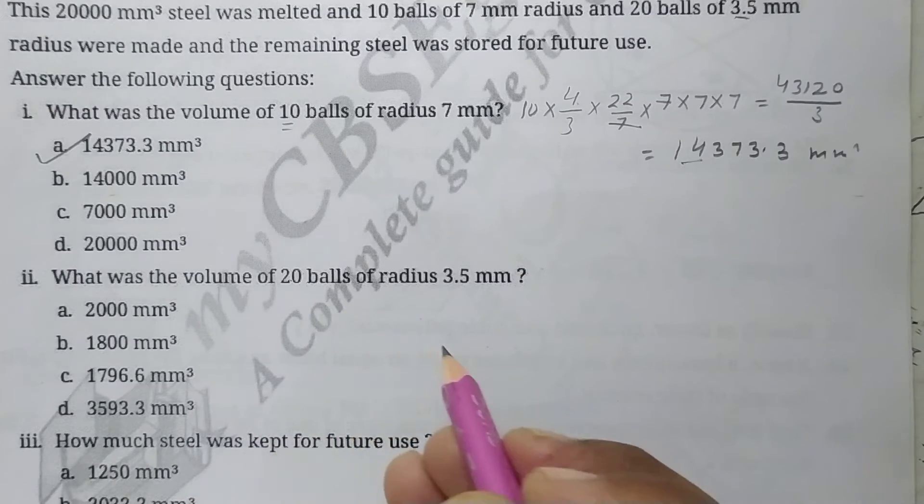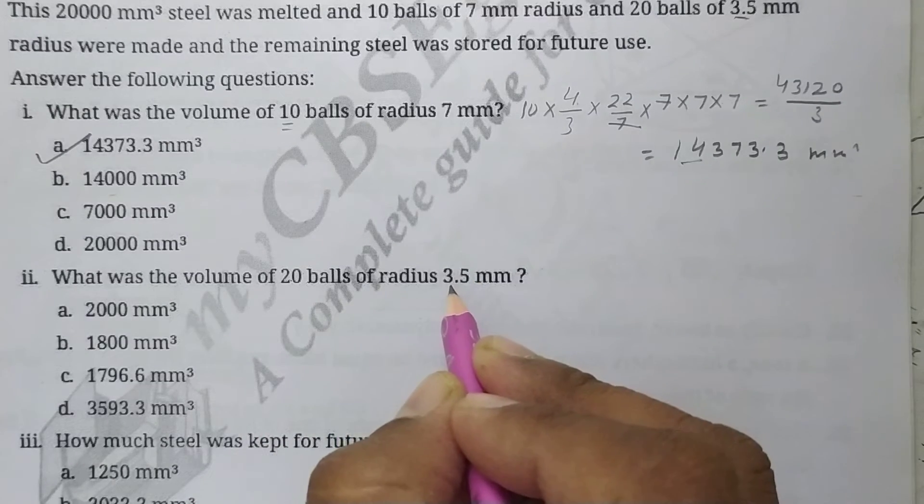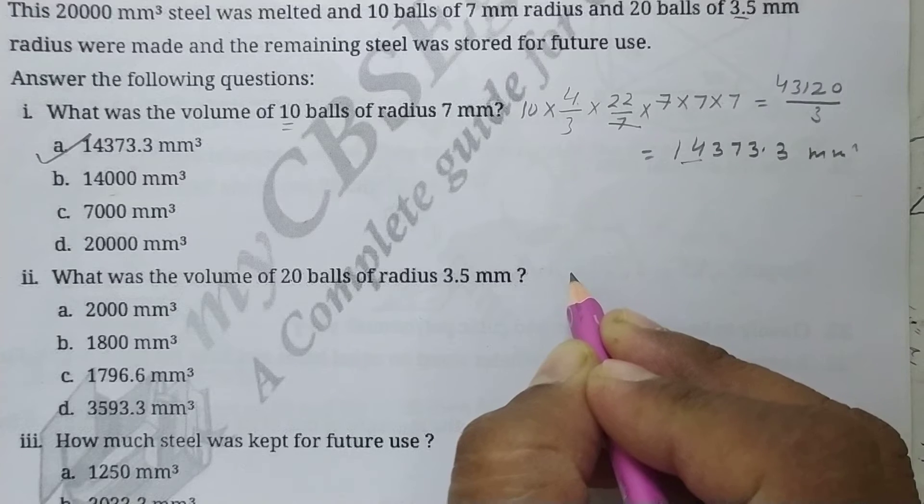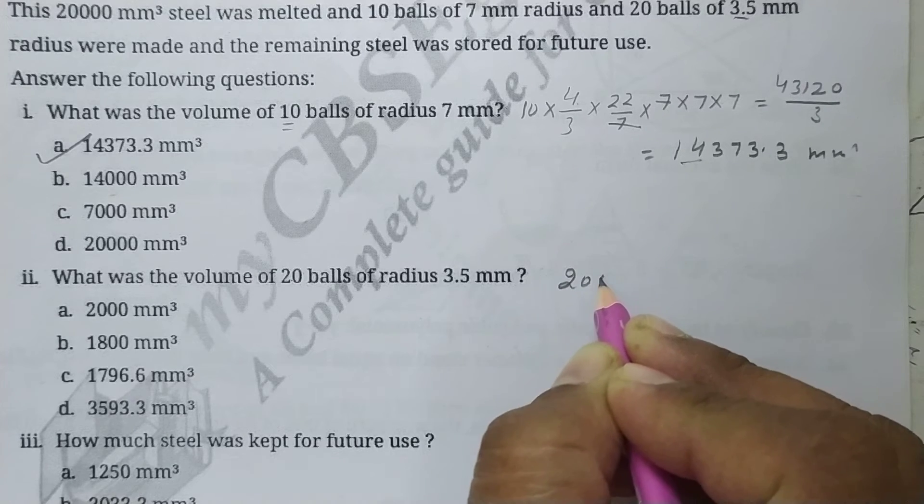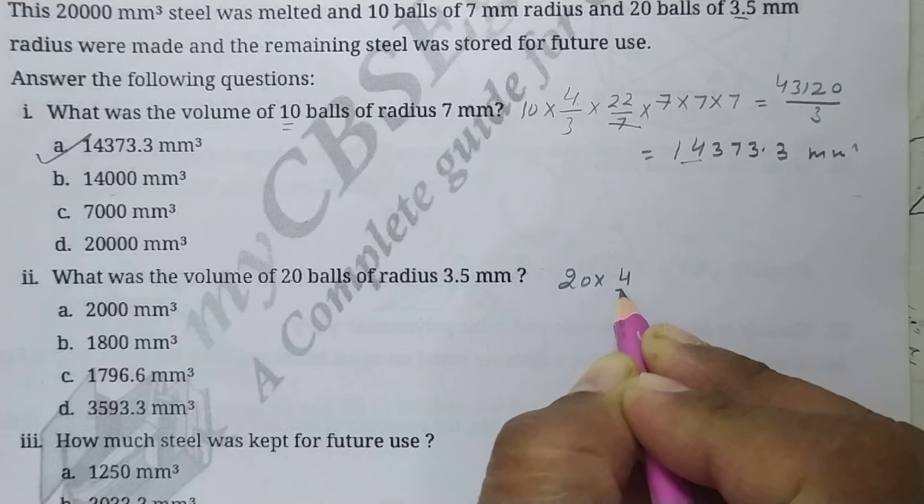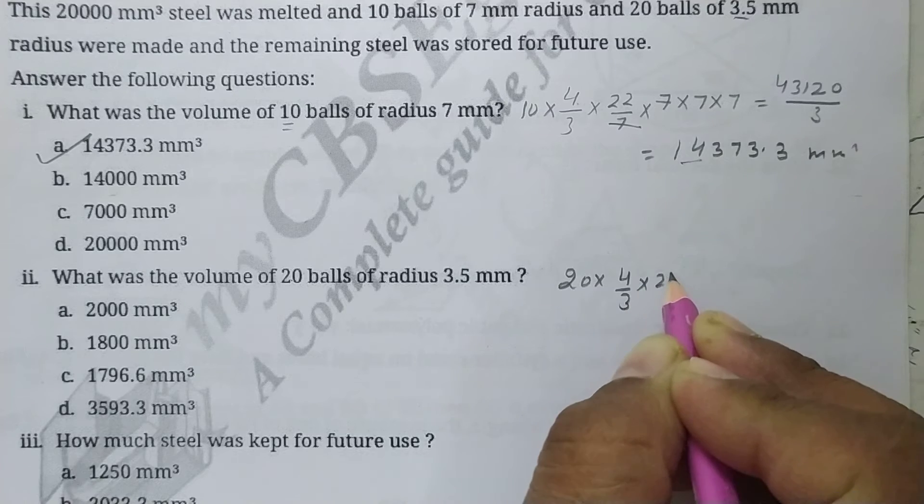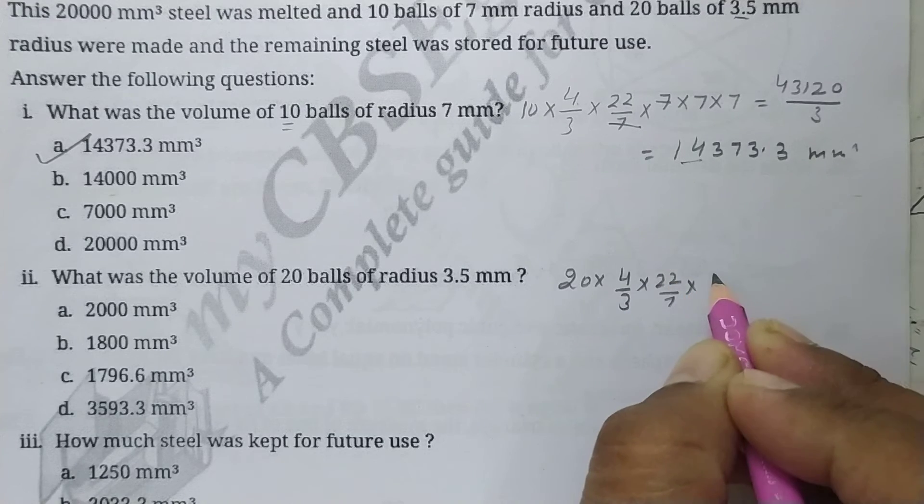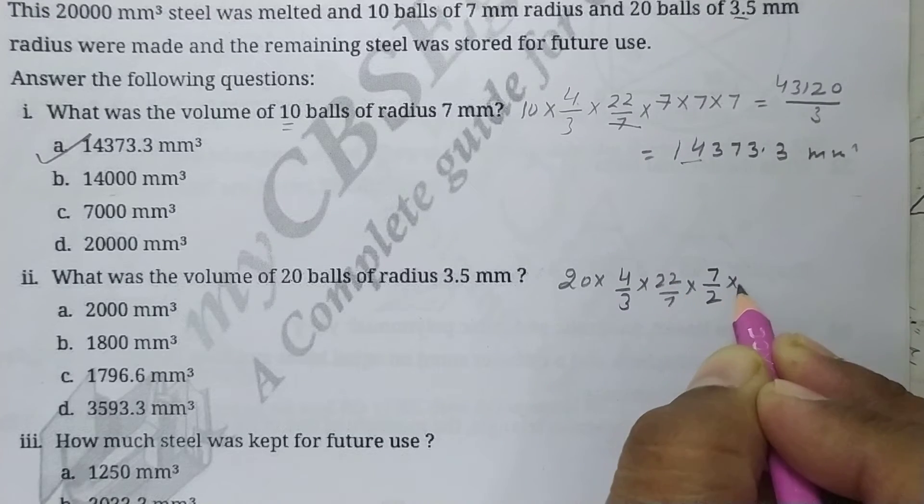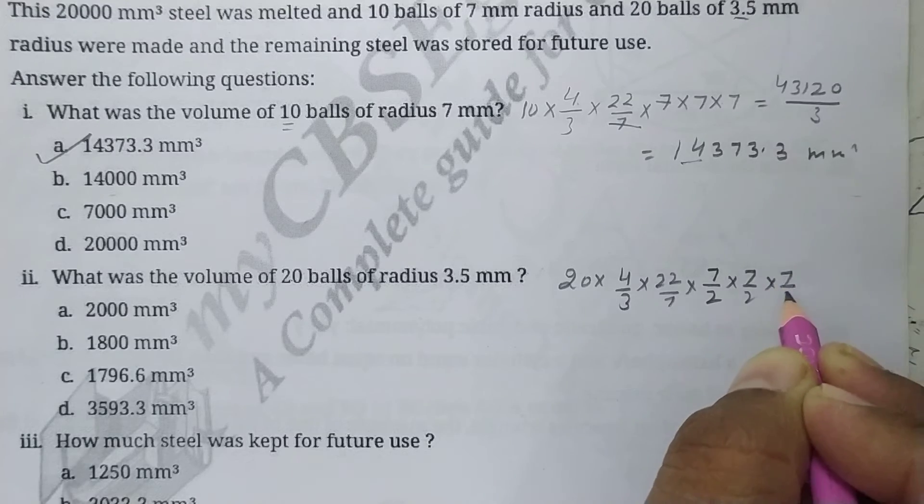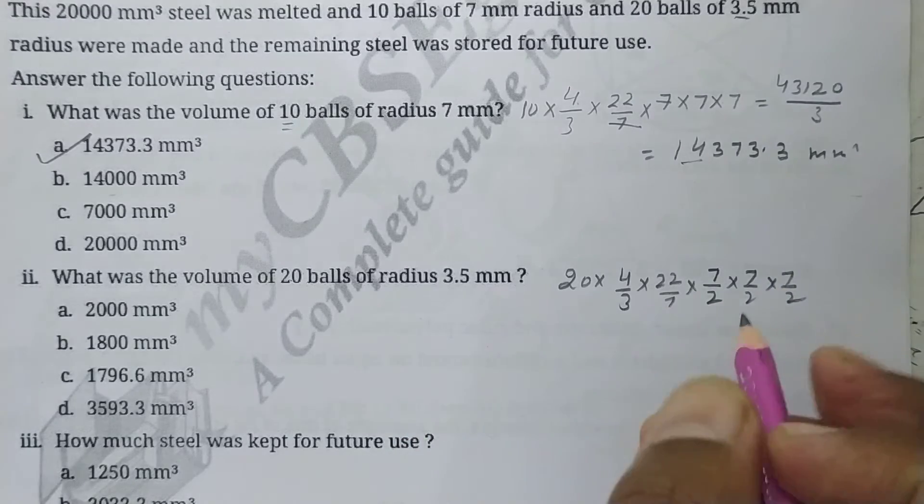So let's see. 20 balls, so multiply 20 into what is volume of one ball: 4 by 3 pi r cube. R cube is 7 by 2 into 7 by 2 into 7 by 2. 3 and a half is 7 by 2 only. So cancel.